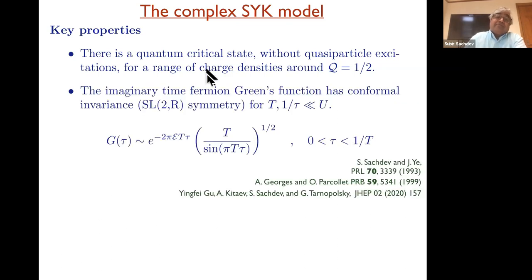First of all, it's rare to have an exactly solvable model without quasi-particles. And it's even rarer to find something that's compressible, meaning you can change the density continuously. So that's one of the reasons we've been very interested in this. If you look at the Green's functions, the single electron Green's function on a single site, which actually self-averages, has this universal form, which in fact implies a certain SL(2,R) symmetry at low temperatures.